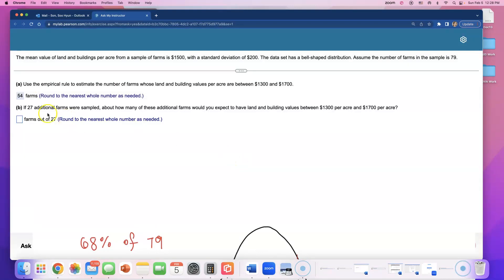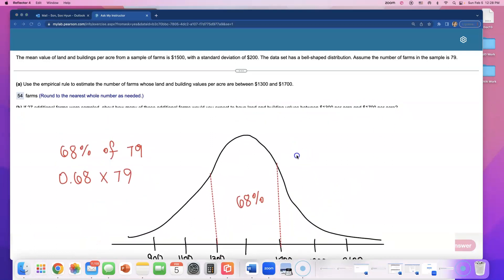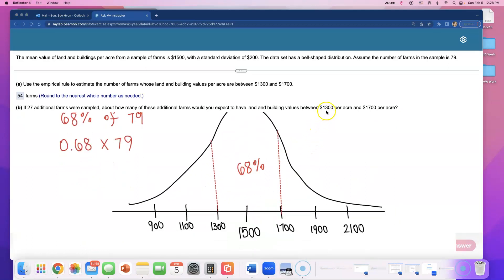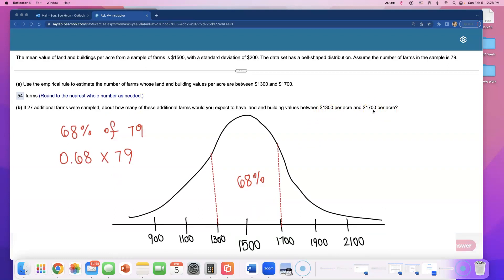Let's do another one. If 27 additional farms were sampled, about how many of these additional farms would you expect to have land and building values between $1300 and $1700 per acre? Notice that we're not changing the percentage here. We're still looking at 68% because they're talking about still 1300 to 1700, but now we have more farms.